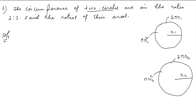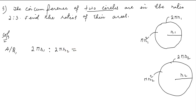The circumference of two circles is in the ratio of 2 is to 3. According to the question, the circumference ratio is 2 is to 3.